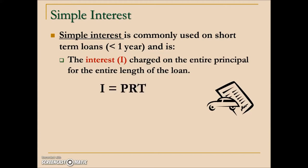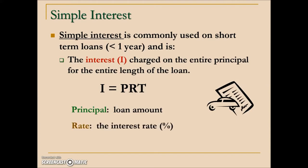The formula is I, the interest, is found by taking P, the principal — which is the loan amount — times R, the interest rate charged expressed as a decimal, times T, which stands for the length of the loan, and this value must be in years.